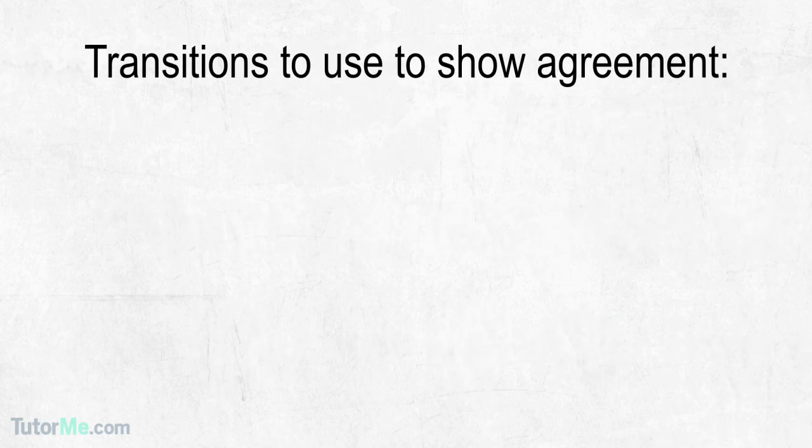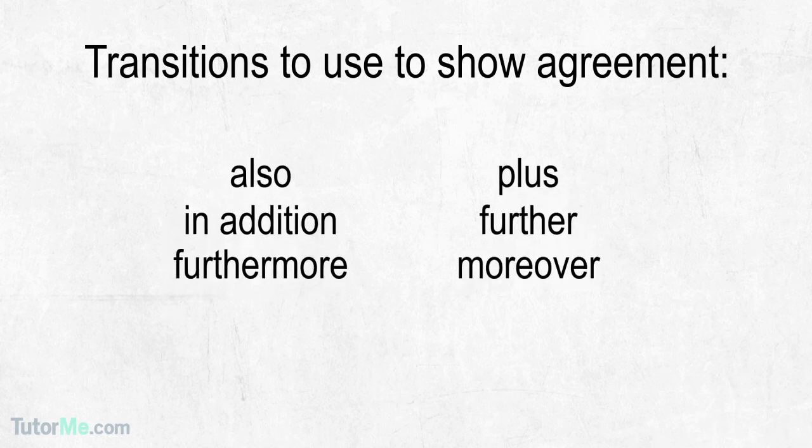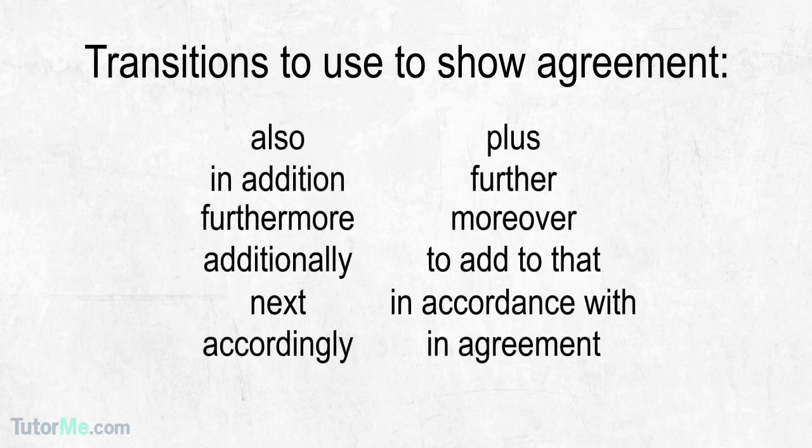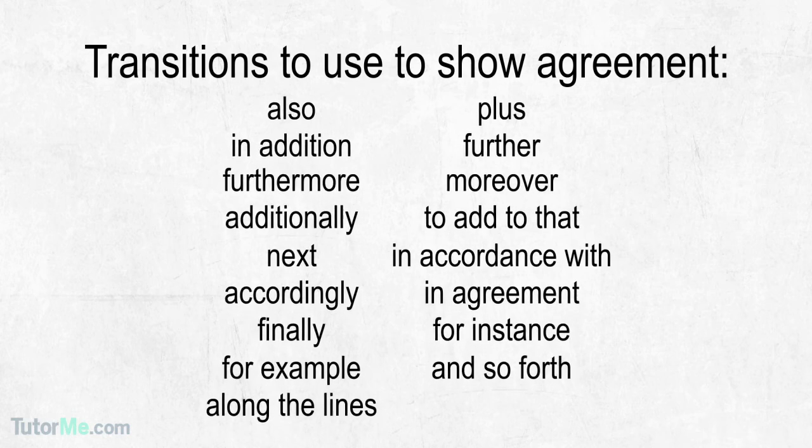Transitions to use to show agreement are also, plus, in addition, further, furthermore, moreover, additionally, to add to that, next, in accordance with, accordingly, in agreement, finally, for instance, for example, and so forth, along the lines, undoubtedly.